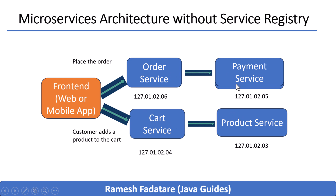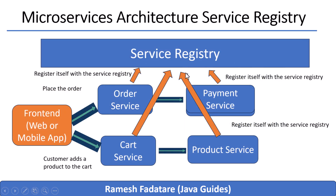Service discovery solves the problem of finding and connecting to the right service even when things keep changing. Every time a service starts up — let's say the payment service — it registers itself with a central system called a service registry. Think of the registry like a directory: it keeps track of which services are online, where they are, and what names they go by. When another service wants to connect, it asks the registry, and the registry responds with the current location of a healthy instance. That lookup is fast, dynamic, and accurate.